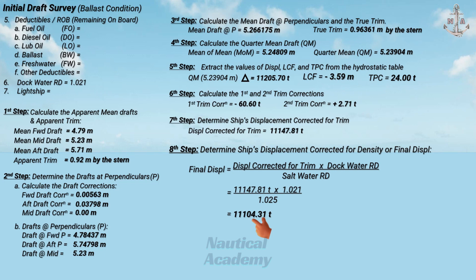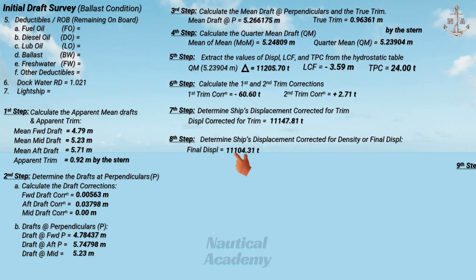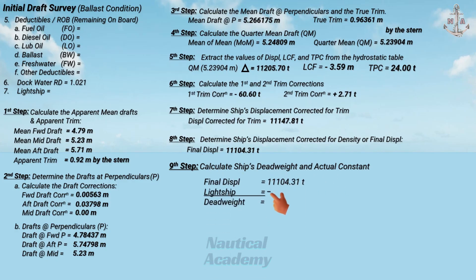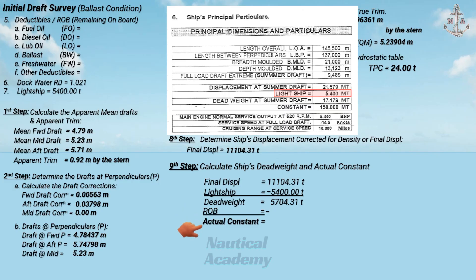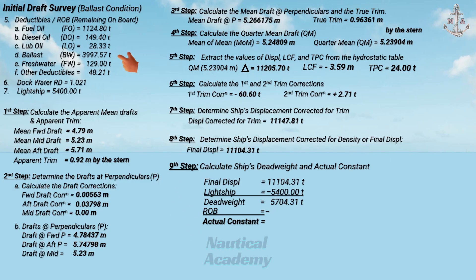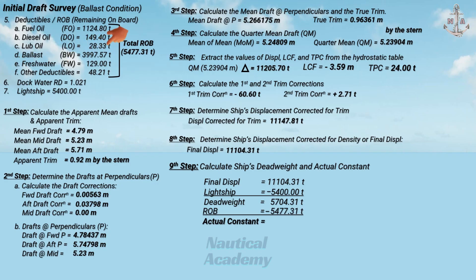Since we have the final displacement, we can proceed to the final step: calculating the ship's dead weight and actual constant. To determine the dead weight, subtract the lightship value (found in the ship's general particulars) from the final displacement. The dead weight is 5,704.31 tons. Subtracting the total ROBs from the dead weight gives the ship's actual constant. In this scenario, the total ROB is 5,477.31 tons — for fuel oil, diesel oil, lube oil, and other engine compartment tanks, consult the chief engineer for exact values. The ship's actual constant is 227 tons, which will be used in the final draft survey.